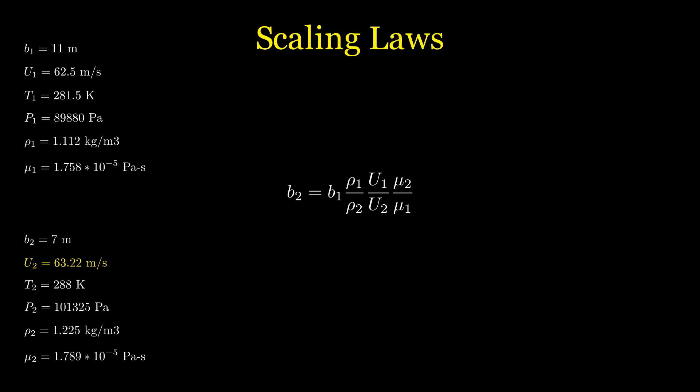What can we change in this equation to make B2 smaller? U2 is fixed due to the Mach number similarity, and mu would be hard to change, so that leaves increasing rho 2.